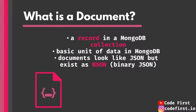So what is a document, and what does it mean in the MongoDB context? A document is basically just a record in MongoDB — all the information about a certain object or element. It's the basic unit of data in MongoDB. It looks like JSON, but it exists as BSON, which stands for binary JSON.